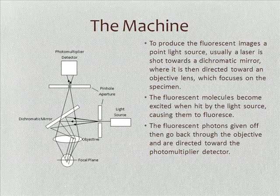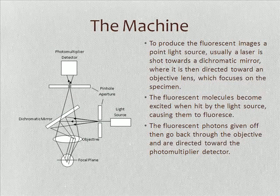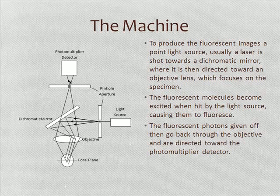In confocal fluorescence microscopy, to produce the images, a light source — which is usually a laser — is shot towards a dichromatic mirror, which then focuses the light through an objective, focusing the light on the specimen and on a specific focal plane. Then as the light bounces off the object, it goes through the objective again, where it is focused to the photomultiplier detector, where it picks up the light.